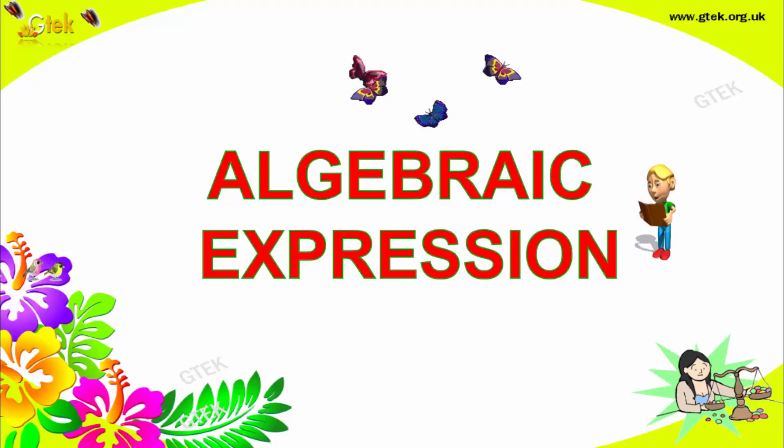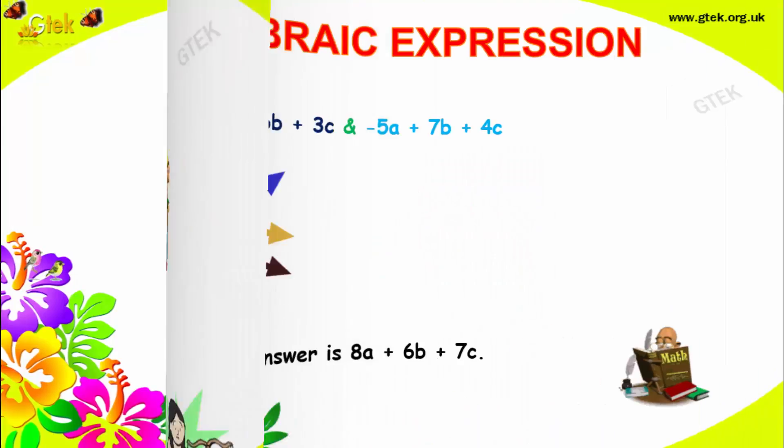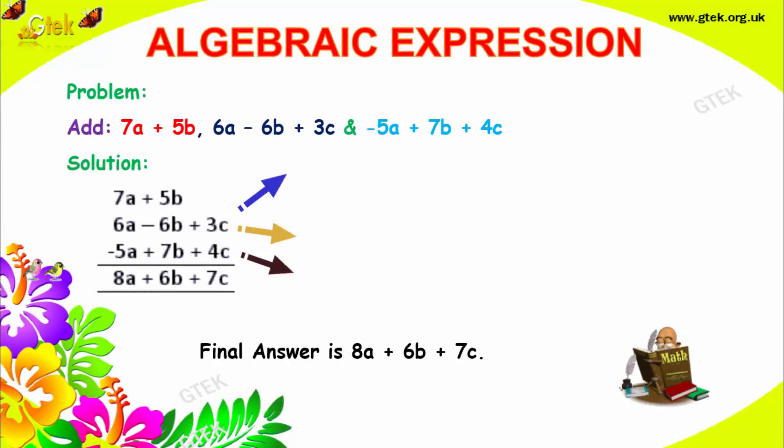Hello. Now we are looking into algebraic expressions. We are seeing how to add polynomials. You can see we got 7a plus 5b, 6a minus 6b plus 3c, and minus 5a plus 7b plus 4c. We got three different polynomials and we are trying to add each. The procedure followed here: